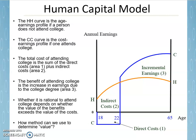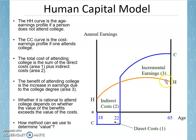Take a look at this diagram. We have an age profile from 18 years old on the horizontal axis all the way up to 65, and annual earnings on the vertical axis. The first curve is the HH curve — the high school earnings curve. This is someone that goes to high school but doesn't go to college. At age 18, they choose to keep their high school diploma, don't continue their education, and start earning money right away. With experience and on-the-job training, their earnings grow, eventually peak in their older years, and then drop as they approach retirement. This is the earnings profile of a person who does not attend college.